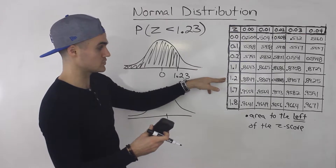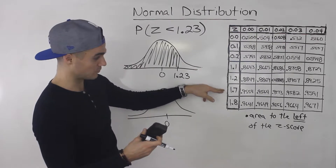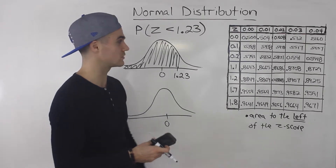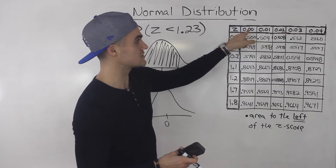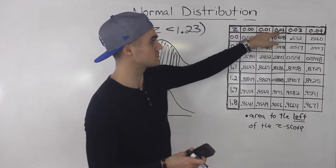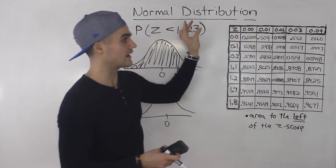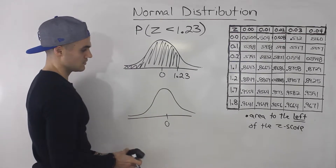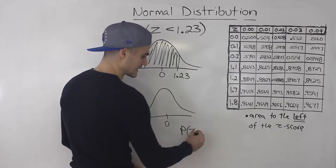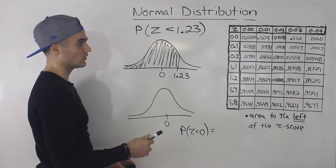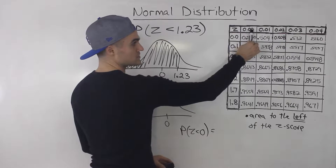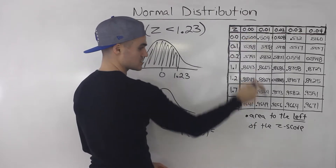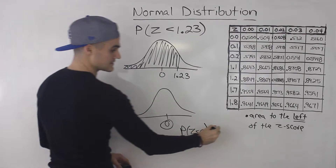I actually skipped a couple and then went to 1.1, 1.2, then skipped again to 1.7, 1.8. You're basically going to see a huge column going from zero all the way to about 3.4. Over here in the first row, these are hundredths — always two decimal places: 0.00, 0.01, 0.02, all the way to 0.09. So if I'm looking for the probability that z is less than zero, we already know that's 0.5. You can see that in the table: zero and 0.00 gives us a z-score of zero, and the area to the left is 0.5.